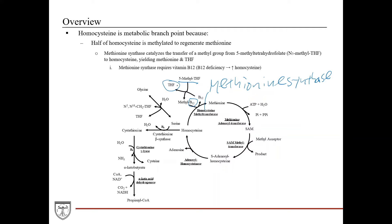That yields tetrahydrofolate, and then it takes that methyl group bound to the B12 component and transfers it to homocysteine, which yields methionine and regenerates B12. To review: it takes the methyl group from tetrahydrofolate, binds it to the B12 component of the enzyme, and then transfers it to homocysteine to yield methionine.